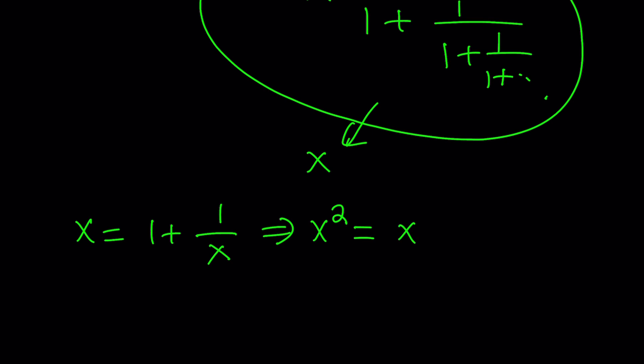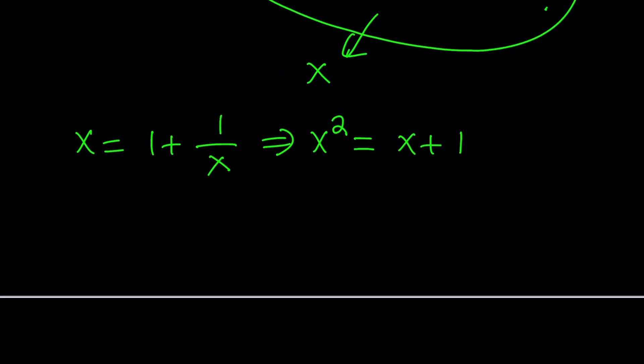Let's multiply everything by x. That gives us x squared equals x plus 1. And now let's put everything on the left hand side. x squared minus x minus 1 equals 0. Do you smell the golden ratio?